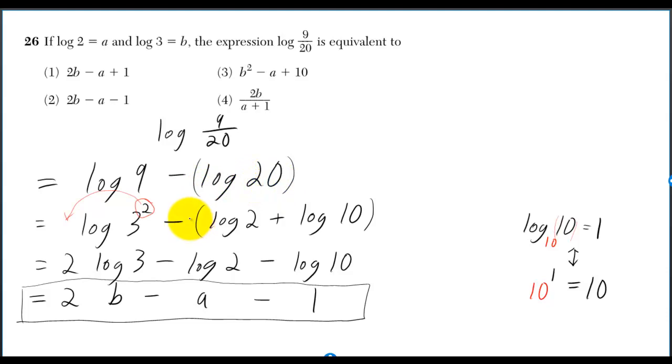So anyway, minus log 20 is equal to minus parentheses log 2 plus log 10. Then we change the sign on each of the logs, so minus log 2 minus log 10 is minus A minus 1, because log 2 is A and log 10 is 1.